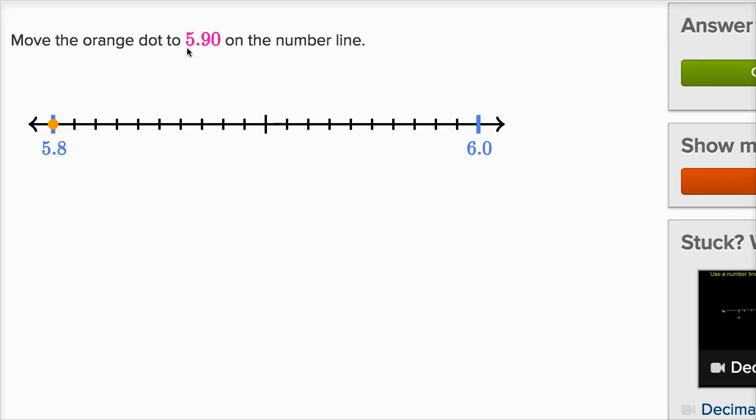We're asked to move the orange dot to 5.90 on the number line. Or you could view this as 5 and 90 hundredths or 5 and 9 tenths. Alright, so let's see, this is 5.8 and then this is 6.0.